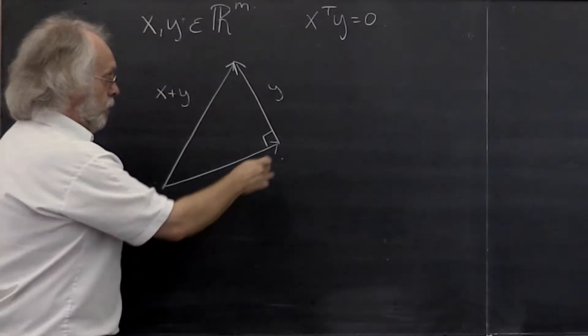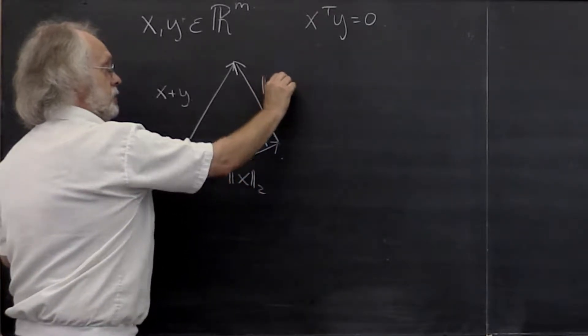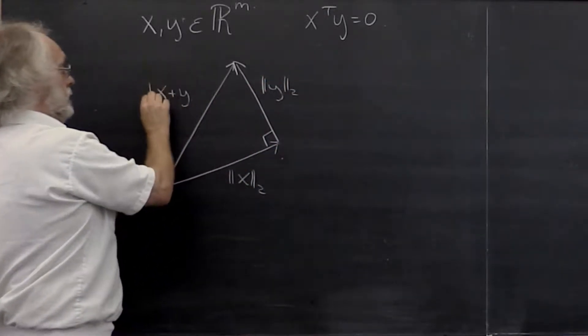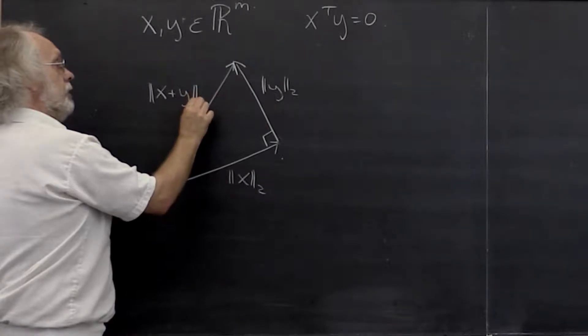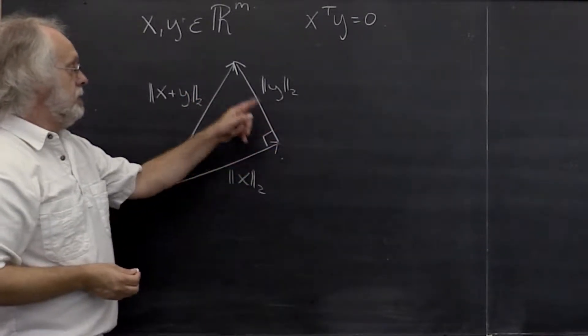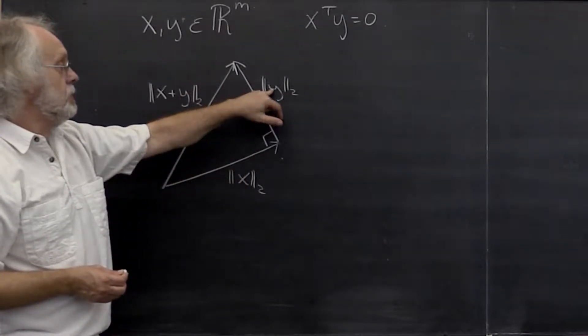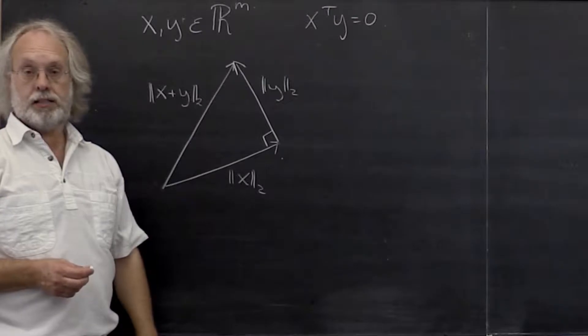And therefore the length of this is given by the two-norm of x. This is the two-norm of y. And this is the two-norm of x plus y. Now if this is a right triangle, then we know that this squared plus that squared must be equal to that squared.